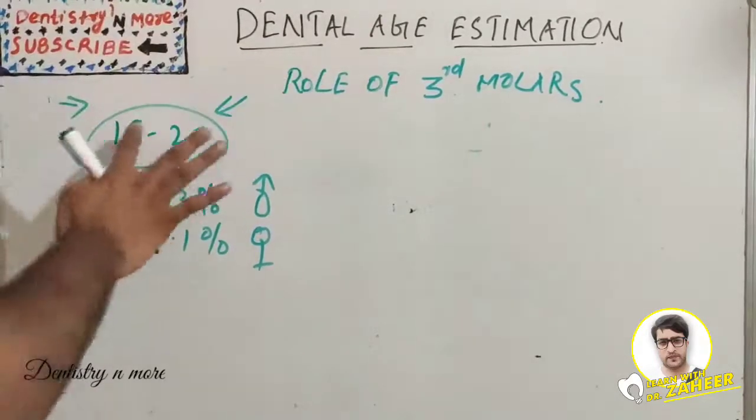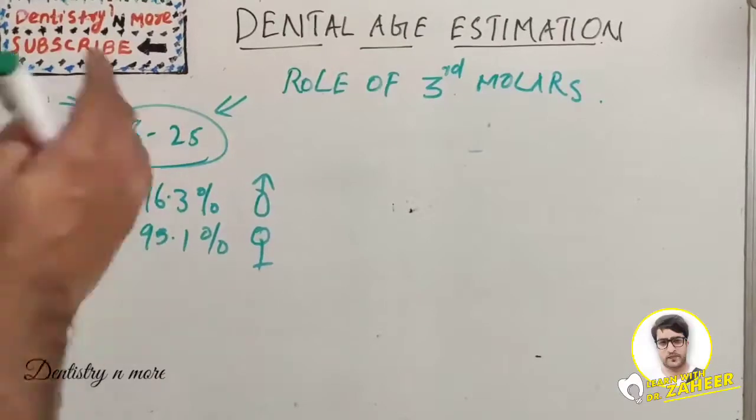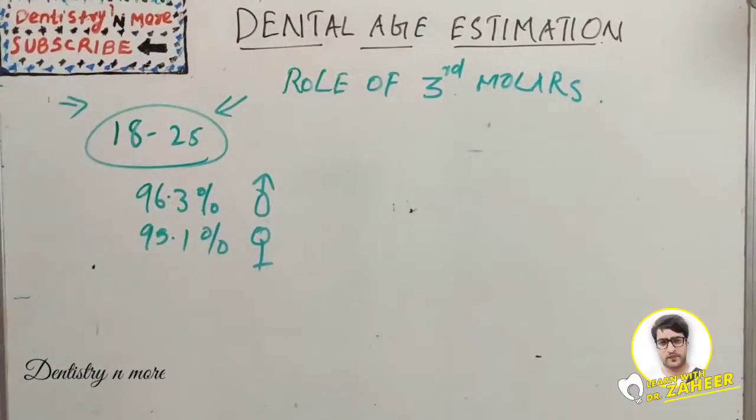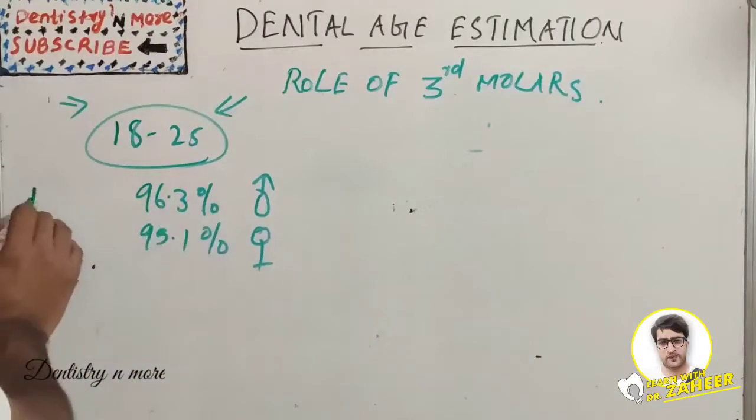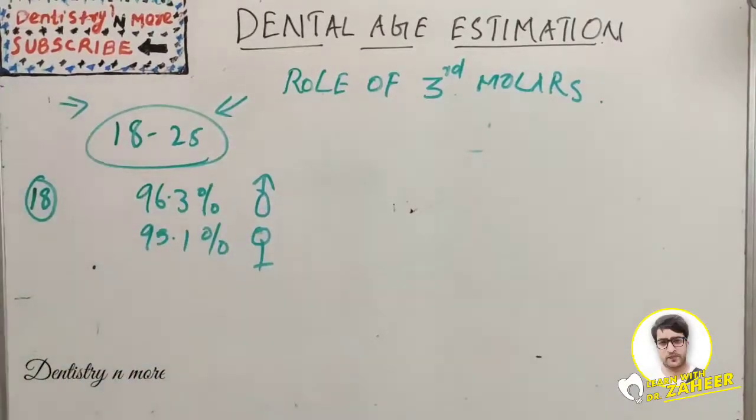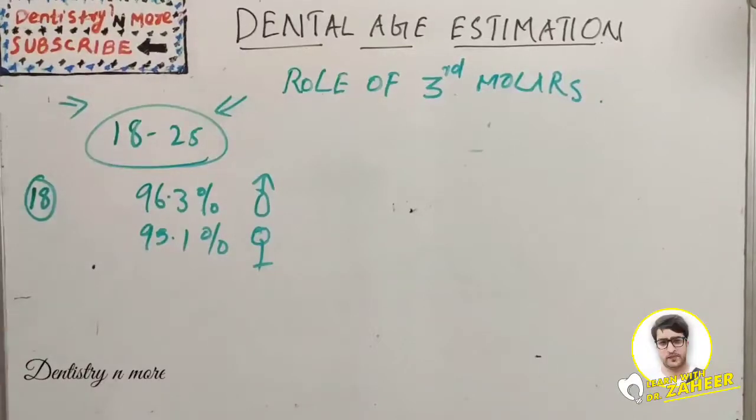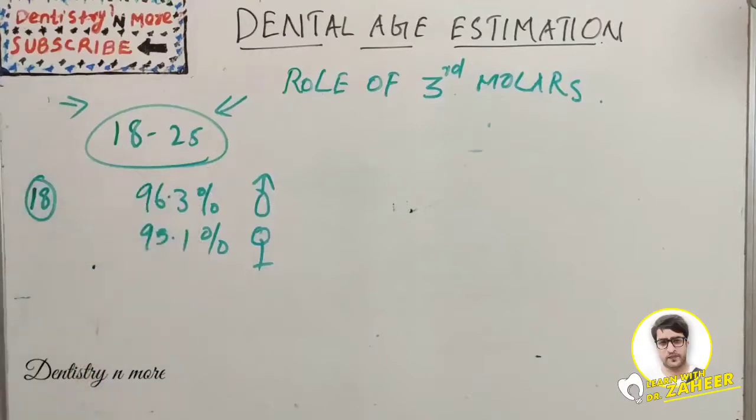The third molar eruption sequence varies from 18 to 25, but we are thinking about calcification. This is the rule: if all four third molars are calcified, then the chances of the individual being 18 years old is 96.3% true in males and 95.1% true in females. If all four third molars are calcified, we can assure the person is 18 years of age.